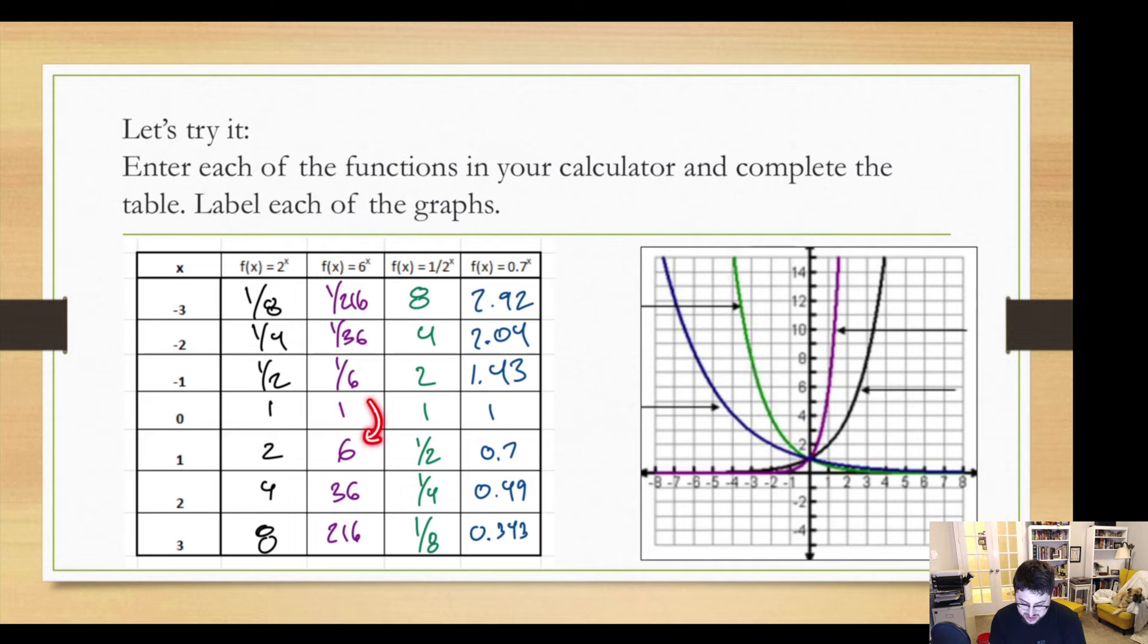While they all start at one, you can see that for the 2, we're multiplying by 2 every single time. For the 6, we're multiplying by 6 every single time. One half, same deal, multiplying by one half. And then 0.7, we're multiplying by 0.7 every single time.